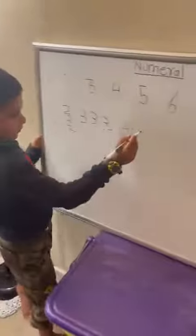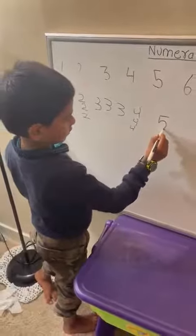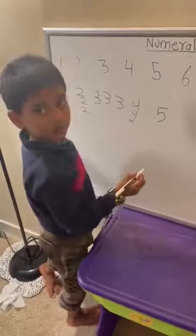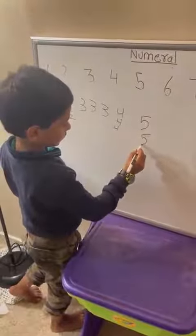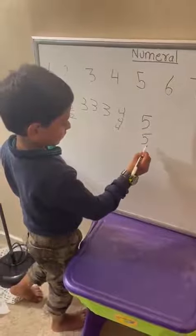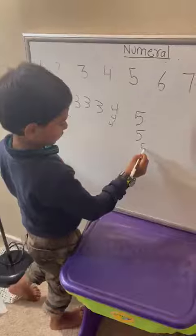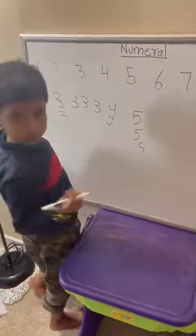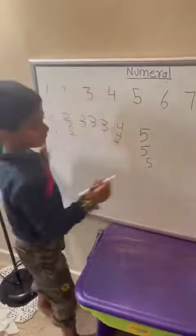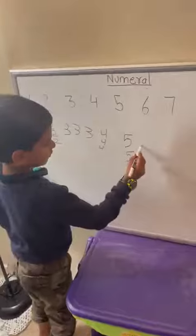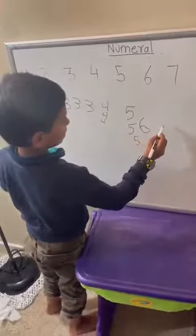Down, around, put on a hat. Down, around, put on a hat. Down, around, put on a hat, to make the new row five.